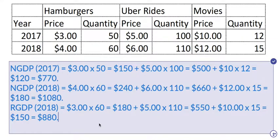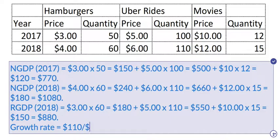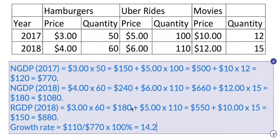Real GDP in 2017 is exactly the same as the nominal GDP of 2017. So the real GDP growth rate is simply the difference between those two years — $880 minus $770 is $110 — divided by the real GDP in the base year, $770. Using the calculator: $110 divided by $770 equals 0.14, multiplied by 100%, which is about 14.2%. That gives us the real growth rate of GDP between the base year and 2018.